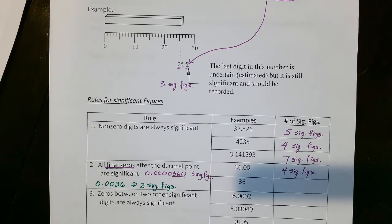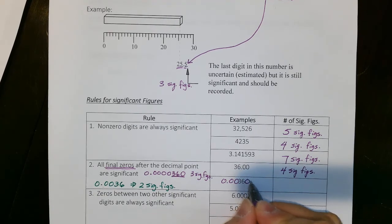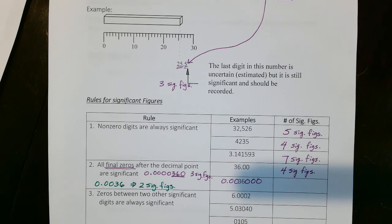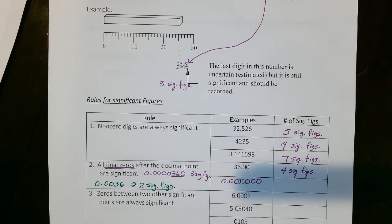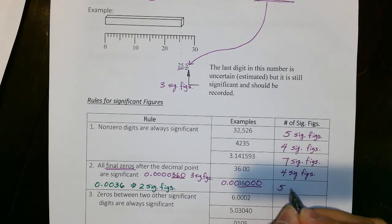For 0.003600, how many significant figures? The answer is five — these leading zeros are not significant, but 3, 6, 0, 0 are all significant. The final zeros after the decimal count. So five sig figs.